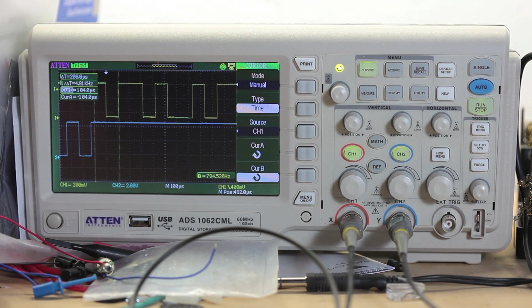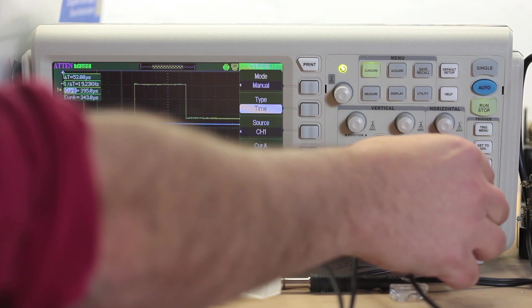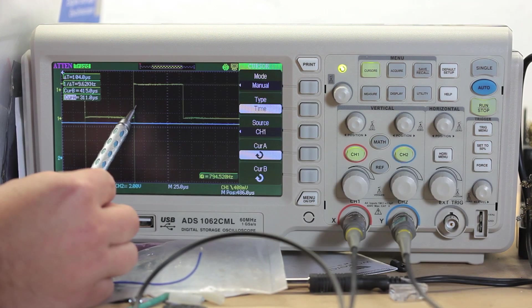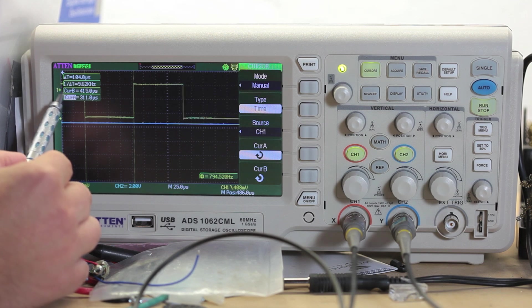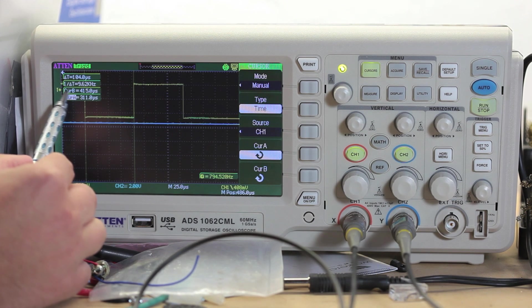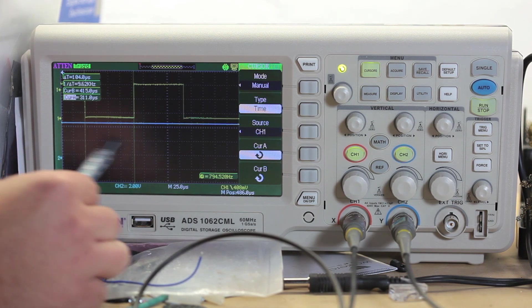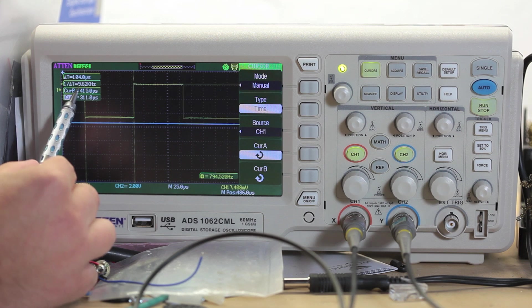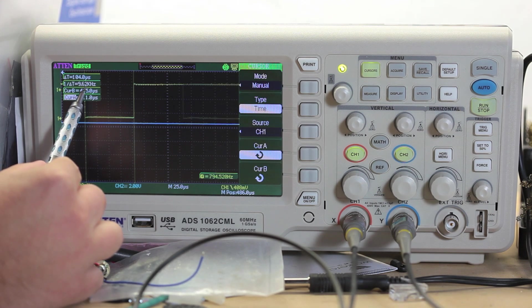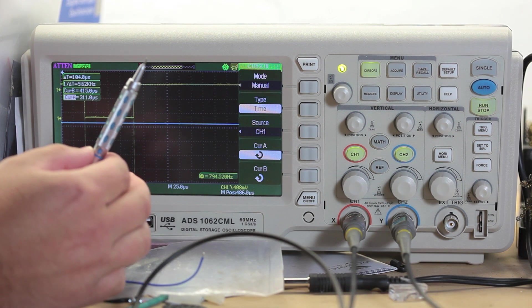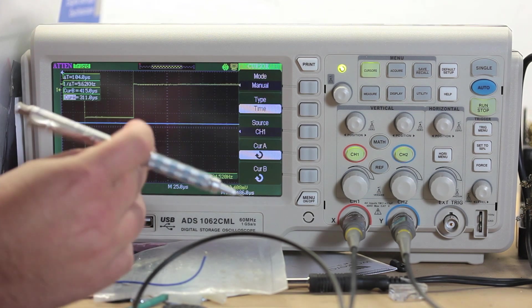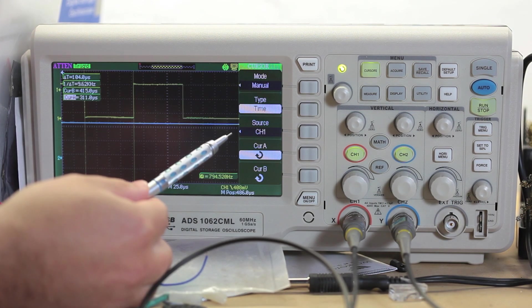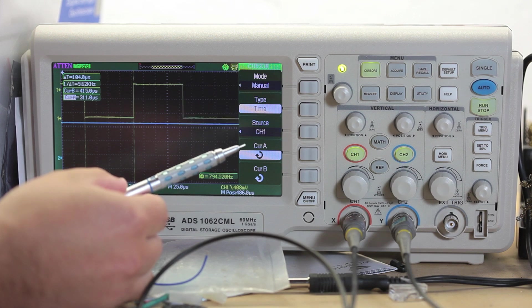And then it goes high again forever. Now, the data rate that I chose was 9600. This is one bit, and the bit width is 104 microseconds. This scope is kind enough to give me 1 over delta T. And it says 9.62 kilohertz. Close enough. I'm transmitting at 9600 baud, which is 9600 bits per second. I've demonstrated the bit pattern and is exactly what we expect it to be.